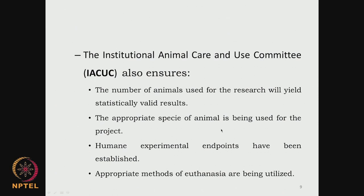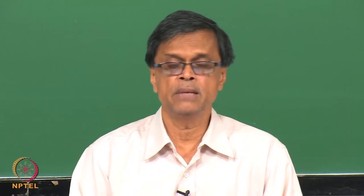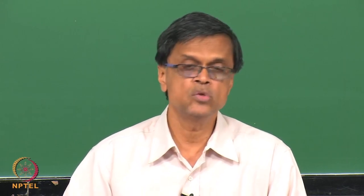Human experimental endpoints have to be established — there has to be a start and end. For example, we are studying the biodegradability of a polymer over a period of 30 days, so that is the start and end point; it is not open-ended research. They also look at whether appropriate methods for euthanasia are used if the animal is sacrificed, how it is being done and what procedures are followed so that the animal does not face pain when it is sacrificed.